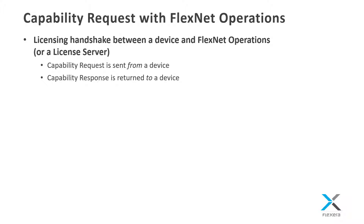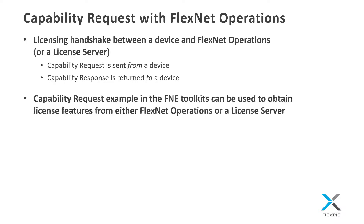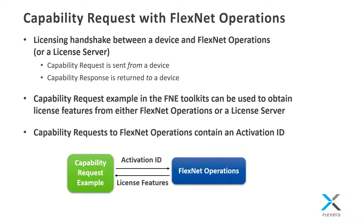The licensing handshake between a device instrumented with FlexNet Embedded APIs and either FlexNet Operations or a license server is accomplished with capability requests and responses. The capability request example provided in the FlexNet Embedded toolkits can be used to obtain licenses from FlexNet Operations or from a FlexNet Embedded cloud or local license server. When performing a capability request and response exchange with FlexNet Operations, the capability request contains an activation ID, and FlexNet Operations returns one or more licensed features for the licensed product being activated based on that activation ID.